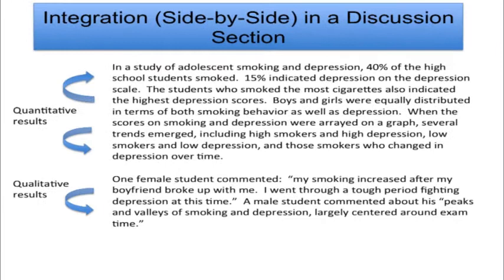How does integration actually occur? One way is in the discussion section of a journal article, where researchers place quantitative and qualitative results side by side. For example, in a study of adolescent smoking and depression, the quantitative phase results are first stated, followed by qualitative results presented as quotes. This presents an integration of both results in a discussion section side by side.